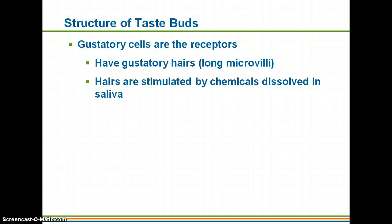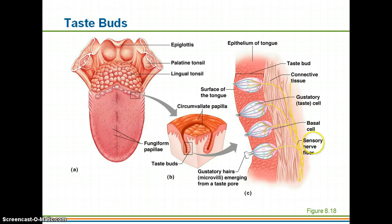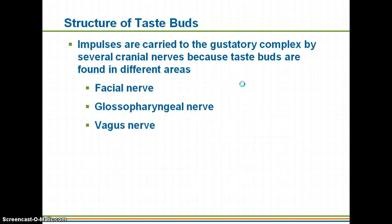Gustatory cells are the cells that make up your taste buds. They have long hairs stimulated by chemicals in your saliva. Each individual cell within a taste bud is a gustatory cell. Impulses are carried to your brain to process taste via different nerves depending on the location of the taste buds — some travel along the facial nerve, some along the glossopharyngeal nerve (glosso meaning tongue), and some along the vagus nerve.